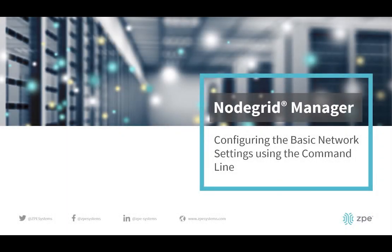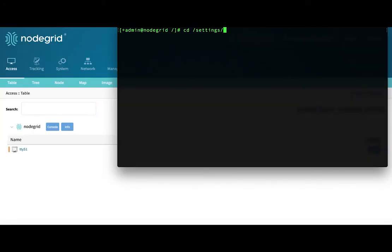Configuring the basic network settings via the command line. If no DHCP server is available on your network, or you want to change from dynamic to static IP, configure the network parameters using the command line. At the prompt of a terminal, type: cd /settings/network_connections/eth0.